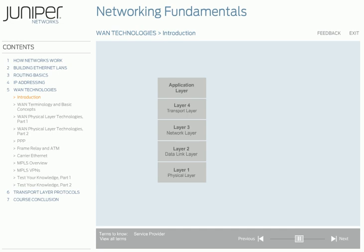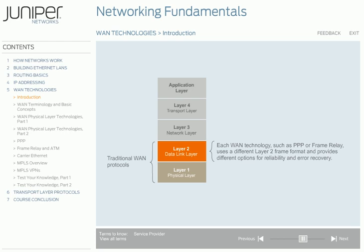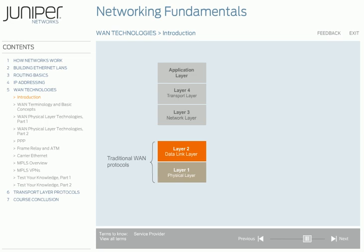Like Ethernet LANs, traditional WAN protocols operate at the physical and data link layers, or layers 1 and 2. Each WAN technology, such as the point-to-point protocol, or PPP, or frame relay, uses a different layer 2 frame format and provides different options for reliability and error recovery. In this section, we'll also cover multi-protocol label switching, or MPLS, which isn't a WAN technology, but a WAN service offered by service providers.